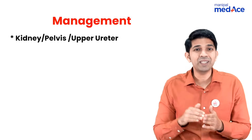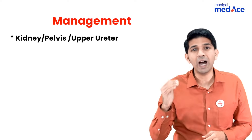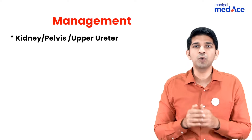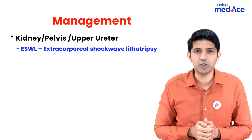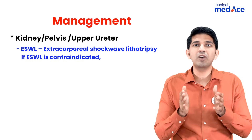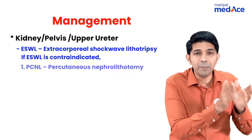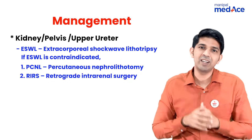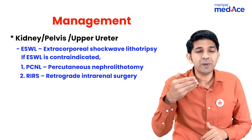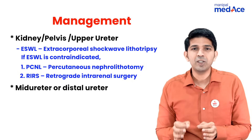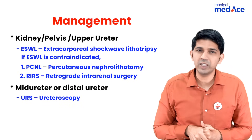Moving over to the management part: if the stone is present in the kidney, the pelvis, or the upper part of the ureter, the treatment of choice is extracorporeal shockwave lithotripsy. If this is contraindicated, your treatment options include percutaneous nephrolithotomy or retrograde intrarenal surgery. If the stone is present in the mid ureter or the distal ureter, it's best to do ureteroscopic surgery for these patients.